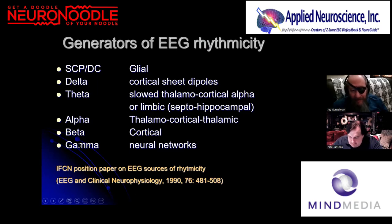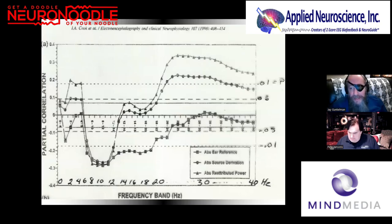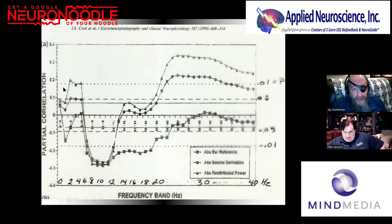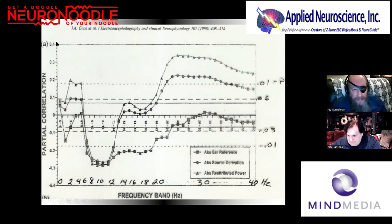The International Federation of Clinical Neurophysiology position paper on what EEG is generated by points to authoritative sources for EEG rhythmicity generators. But we're focusing on the letter F. F is for function. This graph plots EEG frequencies on the x-axis and function — measured by perfusion via SPECT scan — on the y-axis. SPECT scan is probably your best measure of metabolic function.